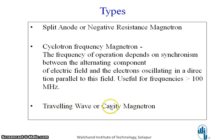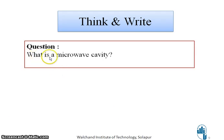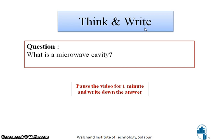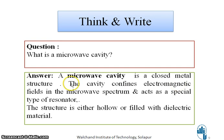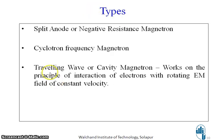The last type is the traveling wave or cavity magnetron. In this video, we will be talking in detail about the cavity magnetron. A microwave cavity is a closed metal structure that confines electromagnetic fields in the microwave spectrum and acts as a special type of resonator. The structure can be hollow or filled with a dielectric material. The traveling wave cavity magnetron works on the principle of interaction of electrons with a rotating electromagnetic field of constant velocity.